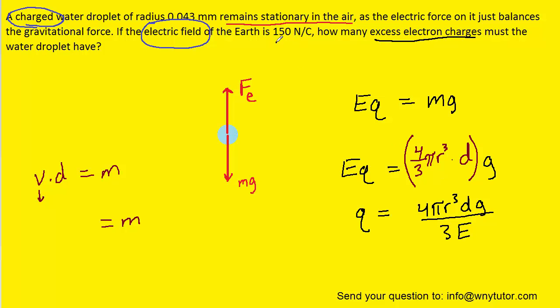The electric field strength was given to us in the question as 150 newtons per coulomb, so that will go in for E. The radius was given in millimeters, so note we'll have to convert that to the standard unit of meters by multiplying it by 10 to the minus 3. The density of water is a known value.